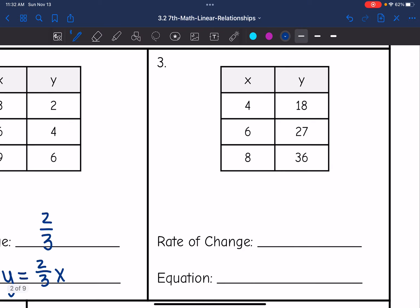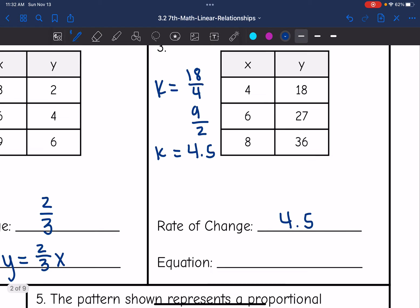Next one, rate of change is the same thing as the constant of proportionality. So I'm going to do y divided by x. I'll just use the first ordered pair and do 18 divided by 4. Both of those numbers are divisible by 2, so I'll do 9 over 2, which you could leave like that. I'm going to change it to a decimal, to 4.5. So my constant of proportionality or rate of change is 4.5, which means my equation is y equals 4.5x.